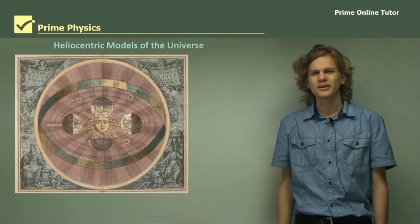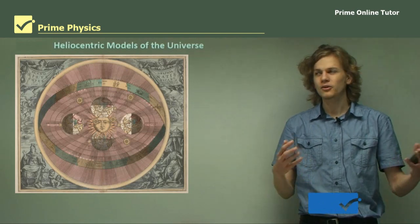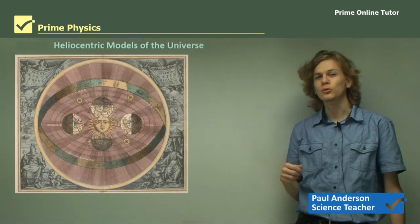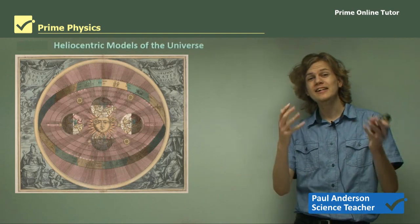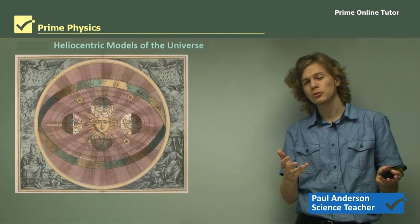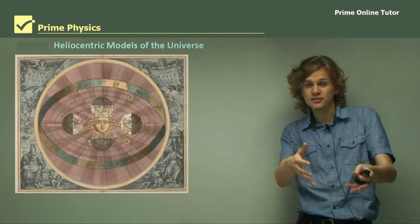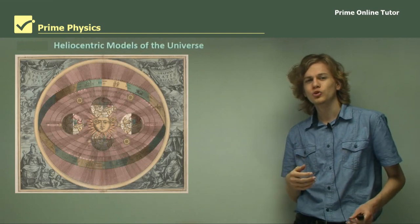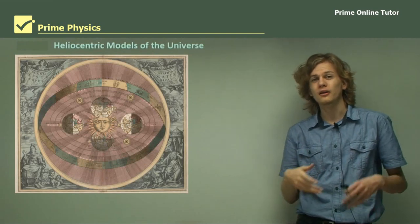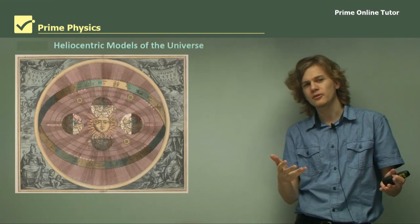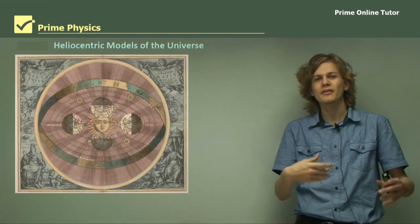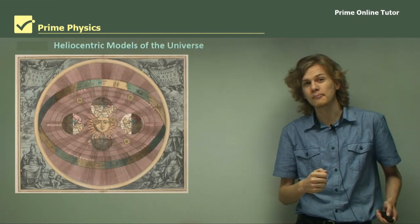Hi, everyone. Today we're starting on a section called the heliocentric models of the universe. Here we'll be learning about heliocentric models, which means sun-centered, rather than geocentric models, which are earth-centered. We'll be learning a little about the history of heliocentric models and how they've evolved over time.